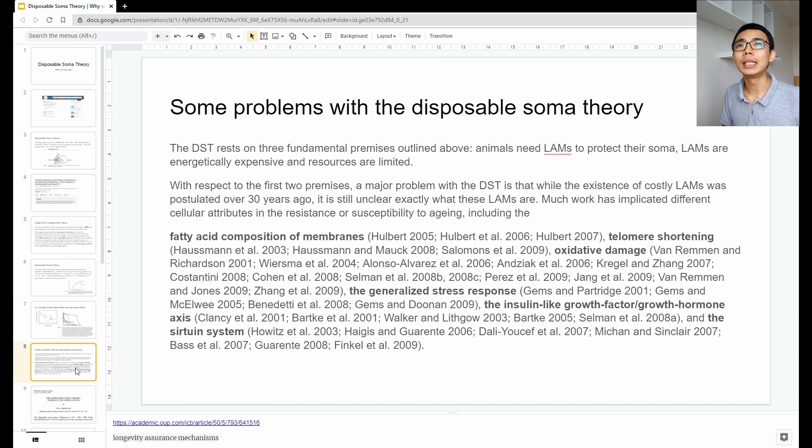Of course, this is not a complete theory by itself and since the initial publication from 1977 many people have made many comments about this disposable soma theory and mostly it comes to LAM. So, as I said just now, species B has a much better way of maintaining their body so they have a much better longevity assuring mechanism. LAM basically means the genetics or the cellular repair system that is in the body to repair the body.